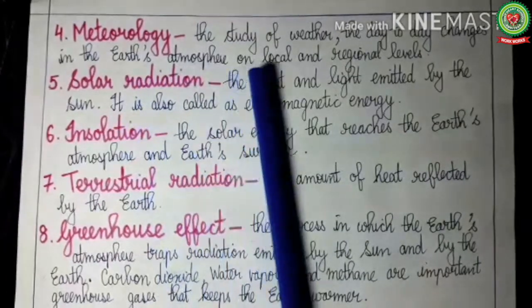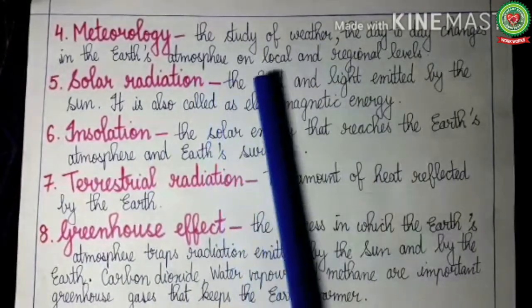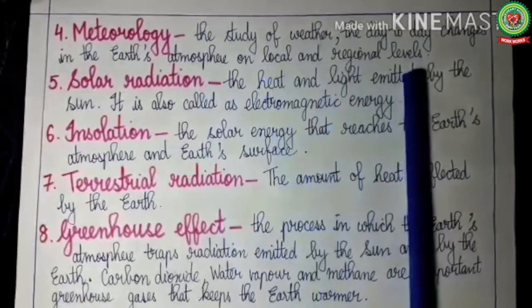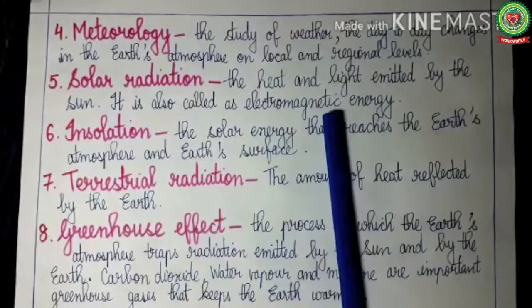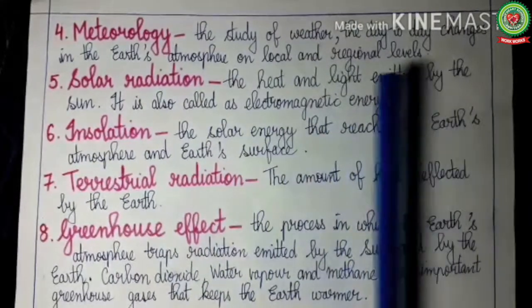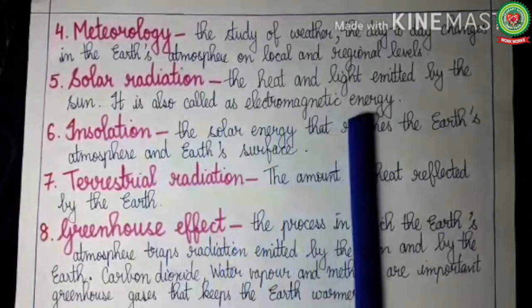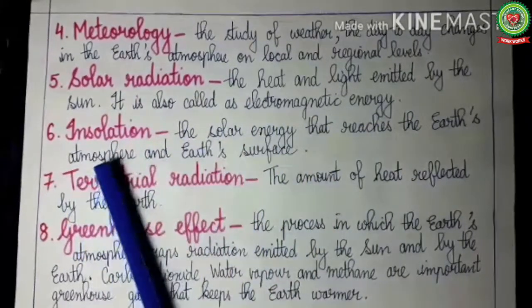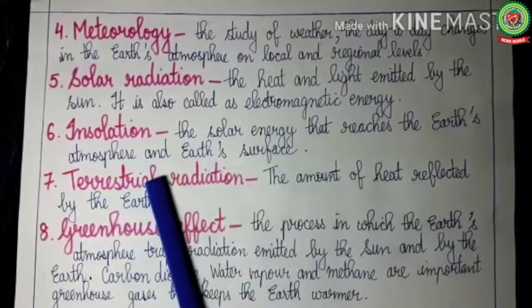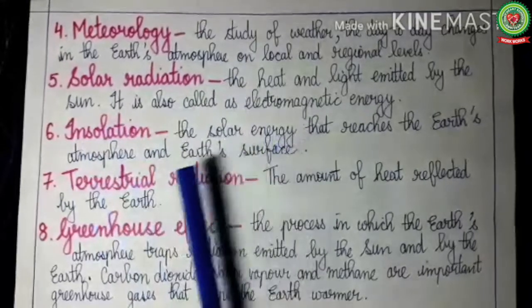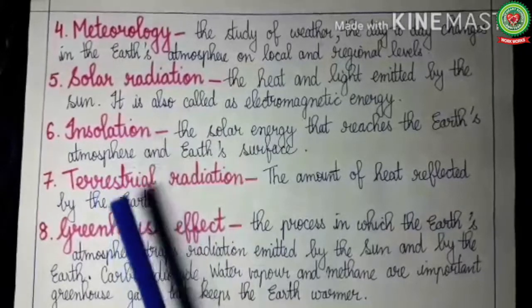Meteorology: the study of weather, that is the study of day-to-day changes in the earth's atmosphere on a local or regional level, is called meteorology. Solar radiation: the heat and light emitted by the sun is called solar radiation, also called electromagnetic energy or electromagnetic radiation. Insolation: the solar energy that reaches the earth's surface and atmosphere — the solar energy which is trapped by the earth and its atmosphere — is called insolation.